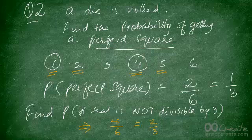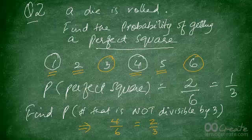Another way of solving this problem would have been to figure out the probability of getting a number that is divisible by 3. You would have discovered that 3 and 6 are two numbers that are divisible by 3, giving a probability of 2 out of 6. Then subtracting that from 1, you would have gotten the same answer: 4 out of 6, or 2 out of 3.